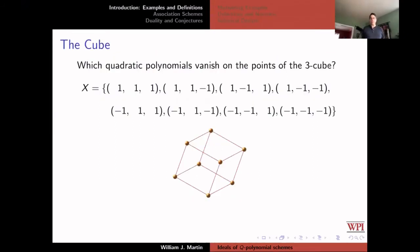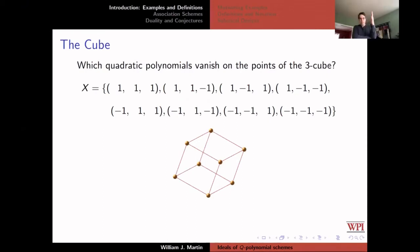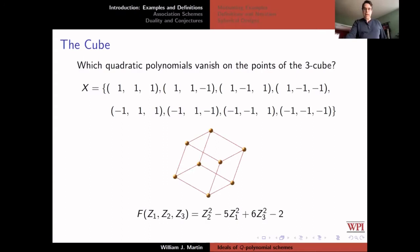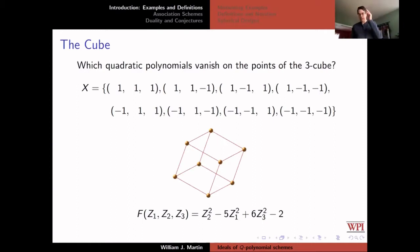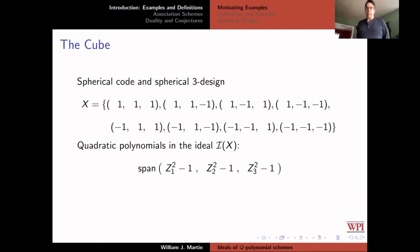Let's start off with the three-cube, and I have a puzzle for you. Think of a quadratic polynomial in three variables that is zero at all eight points of the three-cube. You each will think of a quadratic polynomial, and I bet you don't get the one that I get. I come up with z2 squared minus 5z1 squared plus 6z3 squared minus 2. This polynomial vanishes, but you probably came up with z1 squared minus 1, or z2 squared minus 1, or z3 squared minus 1. It turns out anything that was correct was a linear combination of those three quadratics.